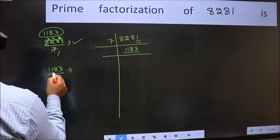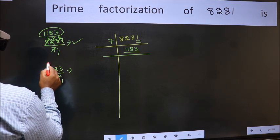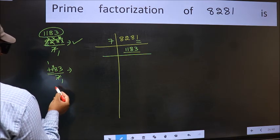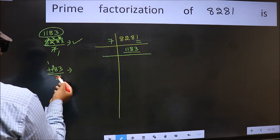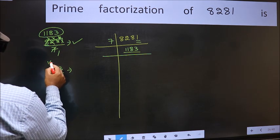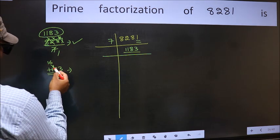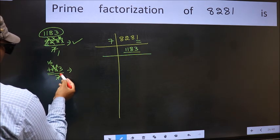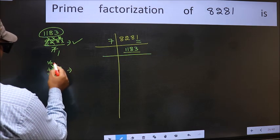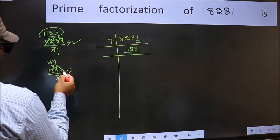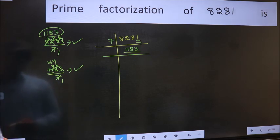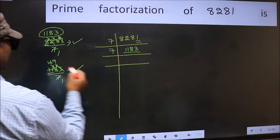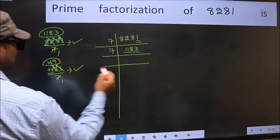A number close to 11 in 7 table is 7×1=7. 11-7=4, carried forward 48. A number close to 48 in 7 table is 7×6=42. 48-42=6, carried forward 63. When do we get 63 in 7 table? 7×9=63. No number has been left out so this is divisible by 7. So 7 here, and here we should write this number 169.